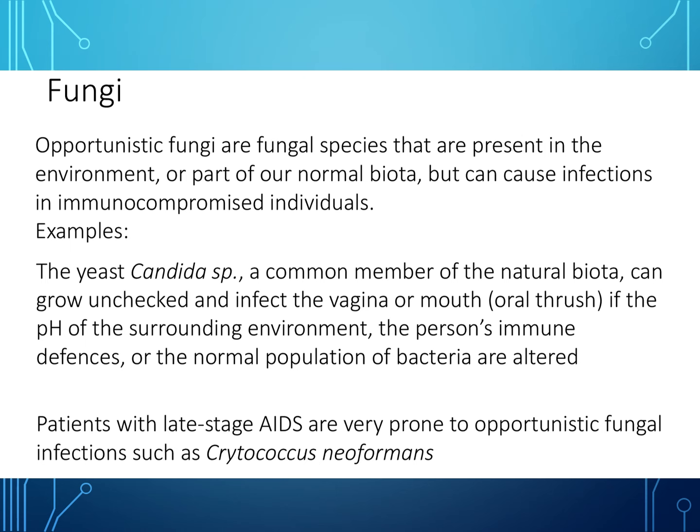Opportunistic fungi are fungal species present in the environment as part of normal biota, but can cause infections in immunocompromised individuals. An example is Candida sp., a common member of normal biota that can grow unchecked and infect the vagina or the mouth — known as oral thrush — if the pH of the surrounding environment, immune system defenses, or normal bacterial populations are altered. Patients with late-stage AIDS are quite prone to opportunistic fungal infections such as Cryptococcus neoformans. These are called opportunistic because a weakened immune system leaves no defense mechanism in place.